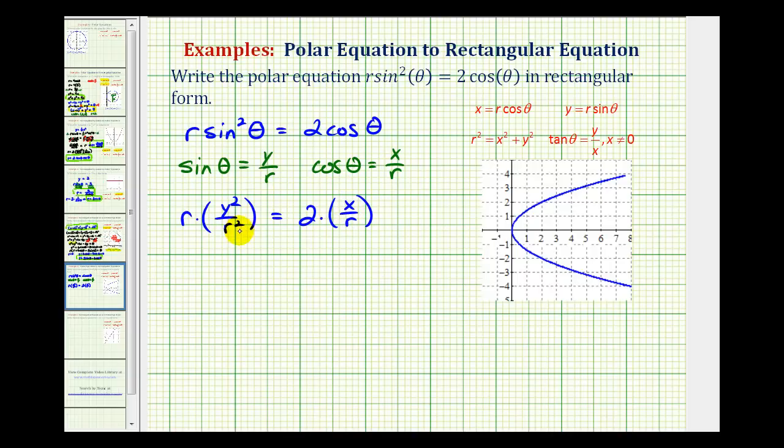Well here, one factor of r simplifies. This would simplify to one, this would become r to the first. So we have y squared over r equals two x over r.